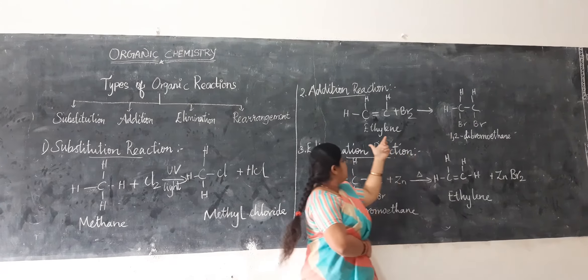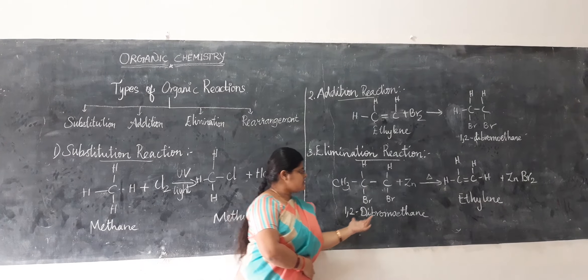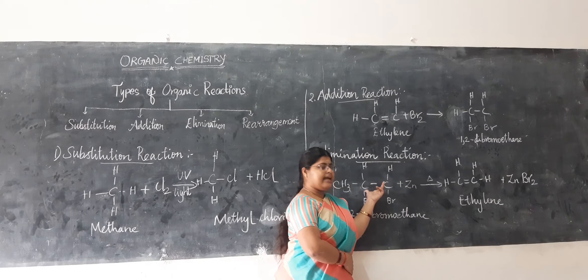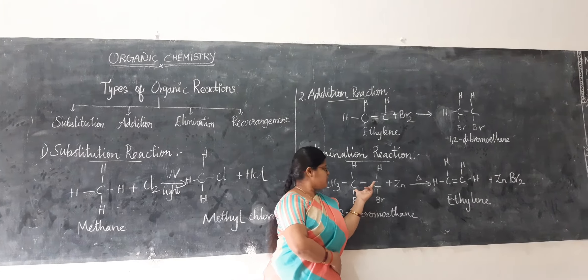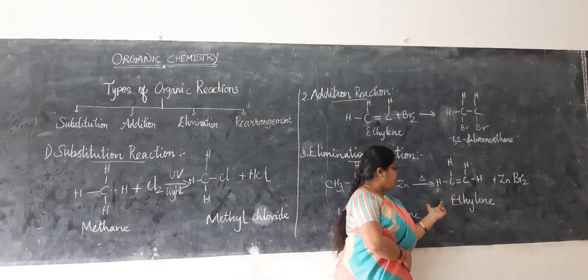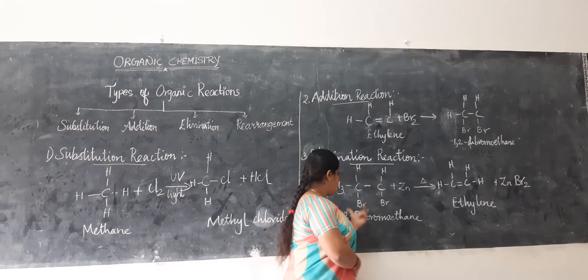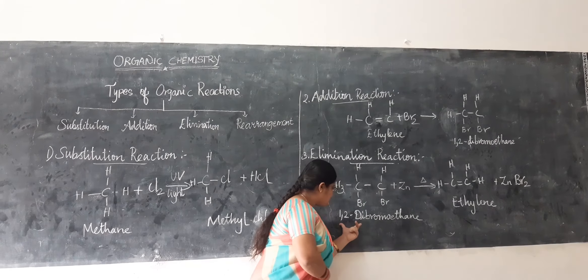Next, we are going to see the elimination reaction. In the elimination reaction, a sigma bond in the substrate breaks and forms a newly created pi bond, resulting in a multi-bonded product. For example, 1,2-dichloroethane in the presence of zinc and on heating gives ethylene.